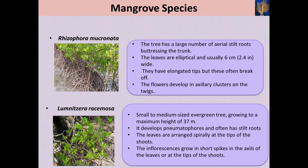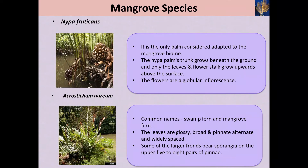It also develops new pneumatophores and often has stilt roots, with the leaves arranged spirally at the tip of the shoot. Nipa fruticans is a special mangrove species — it is actually a palm tree but adapted to the mangrove biome. The Nipa palm's trunk grows beneath the ground and only the leaves and flowers grow upward above the surface. The flowers are a globular inflorescence.